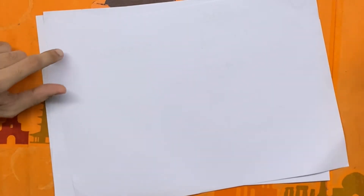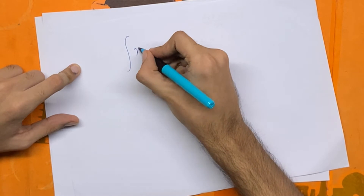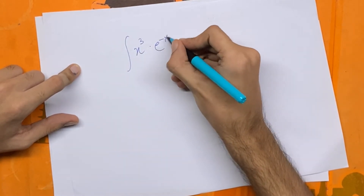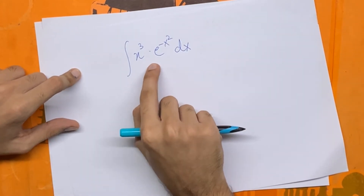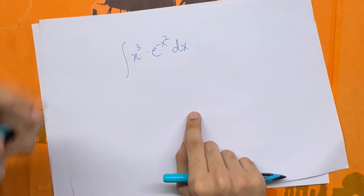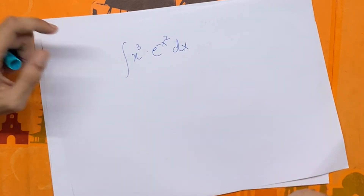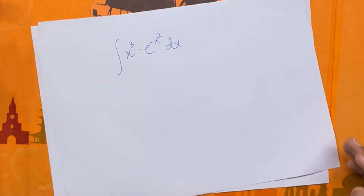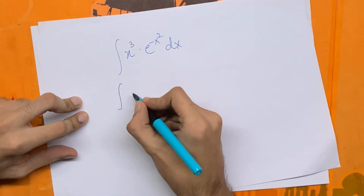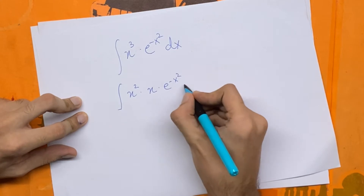So now let's start solving this problem. I'm going to rewrite the integral here but without the boundaries and we can add them back later at the end. So we have x cubed times e to the power minus x squared dx. We can write x cubed as x times x squared, and the x we can use to substitute when we find the derivative of minus x squared. Let's write this down as x squared times x times e to the power minus x squared dx.